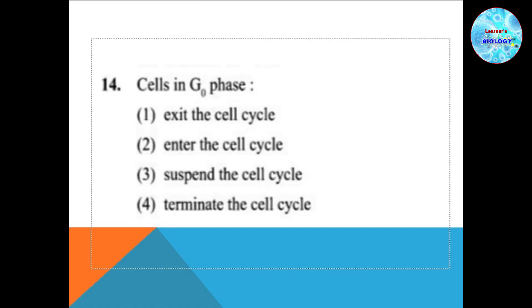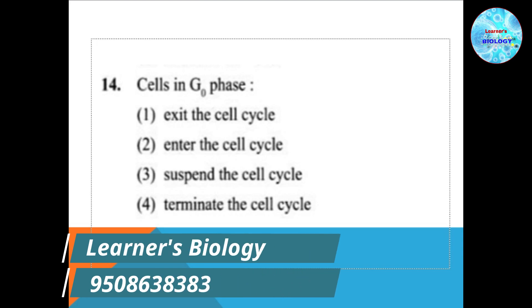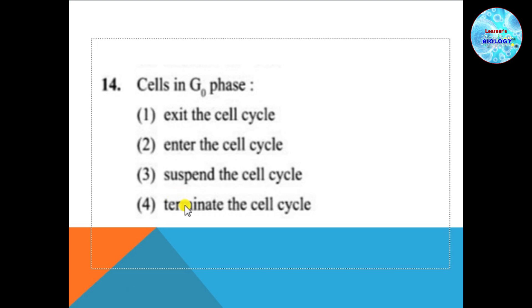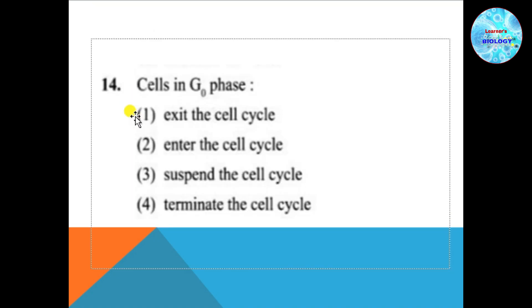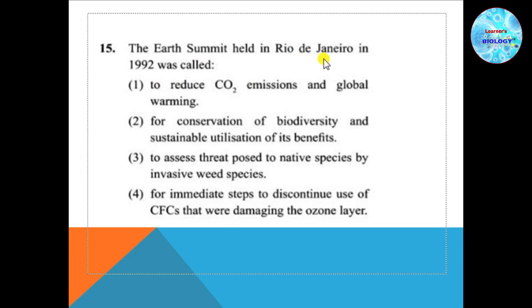Question number 14: Cells in G0 (G-naught) phase — option 1: exit the cell cycle, option 2: enter the cell cycle, option 3: suspend the cell cycle, option 4: terminate the cell cycle. The G0 phase is a quiescent state outside the cell cycle — cells that are not undergoing division stay in G0. So the answer is exit the cell cycle — that is answer number 1.